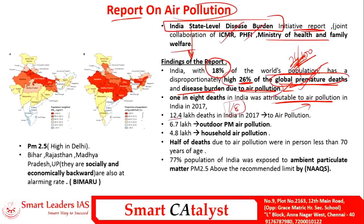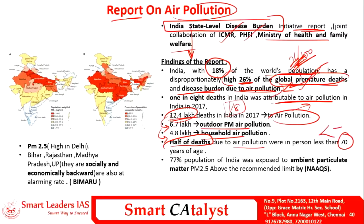Nearly 12.4 lakh deaths in India are due to air pollution: 6 lakh are due to outdoor pollution and 4 lakh are due to household air pollution. One more shocking fact is that half of the deaths due to air pollution were among people who were less than 70 years of age.